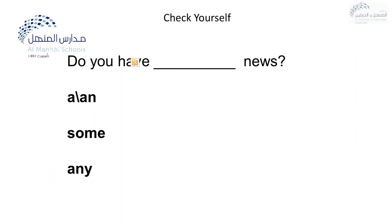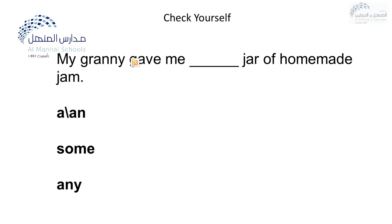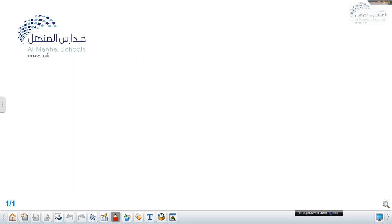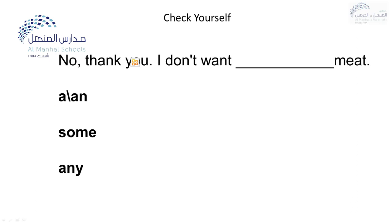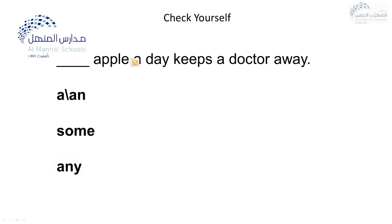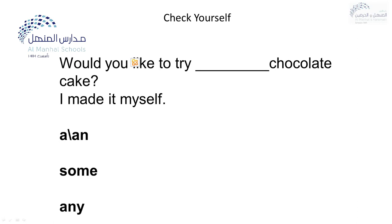Do you have any news? My granny gave me a jar of homemade jam. Jar is singular so I can say only a jar of — a jar of homemade jam. No thank you, I don't want any meat. Apple — we use an apple. Would you like to try some chocolate? So we put some chocolate here.